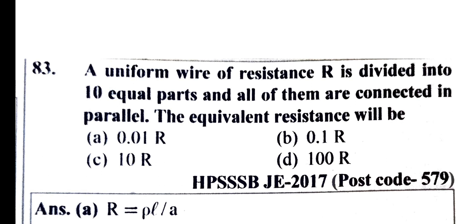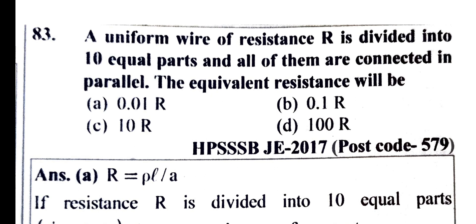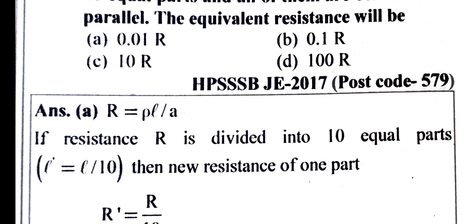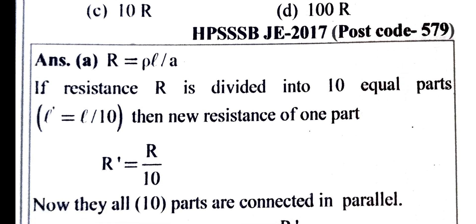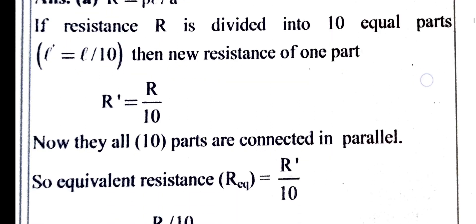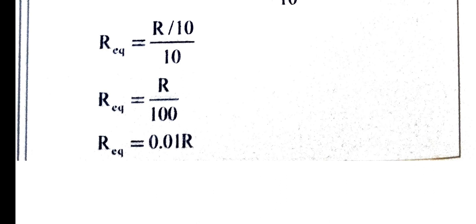A uniform wire of resistance R is divided into 10 equal parts, and all of them are connected in parallel. What is the equivalent resistance? Since resistance R equals ρL/A, each part has length L/10, so the new resistance of one part R' equals R/10. With 10 such parts all in parallel, the equivalent resistance equals R/10 divided by 10, which gives 0.01R. Option A is the answer.